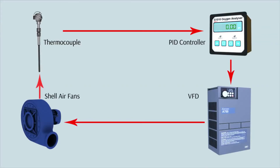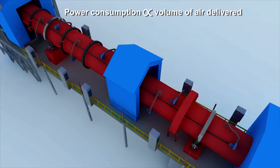For change of temperature for a particular zone, the corresponding speed of the shell air fan for that zone will be varied using a variable voltage frequency drive. Thus, changing the speed of one of the shell air fans will not affect the others. Since the power consumption is directly proportional to the volume of air delivered, there will be significant energy saving.